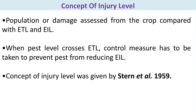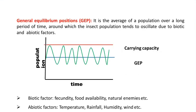To understand when an insect becomes a pest, we need to study the concept of injury level. The population or damage is assessed from the crop and compared with ETL and EIL — Economic Threshold Level and Economic Injury Level — the most important concepts in pest management. When the pest level crosses the ETL, control measures have to be taken to prevent the pest from reaching the EIL. This concept was given by Stern et al. in 1959.